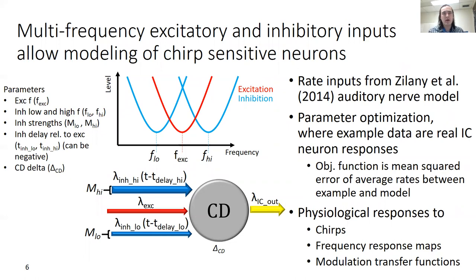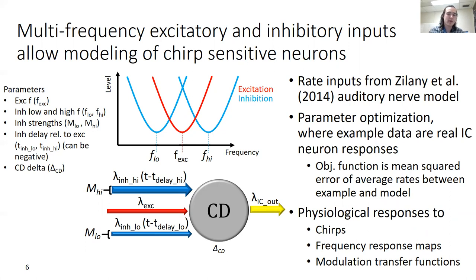Based on these proposed mechanisms, our model takes input from three frequencies: an excitatory center frequency and two flanking inhibitory frequencies. We utilize rate inputs from the Jelani et al. 2014 auditory nerve model. The IC stage has many adjustable parameters: the excitatory frequency, two inhibitory frequencies (one low and one high), strength constants for each inhibition, inhibitory delays relative to the excitation (which can be negative, meaning it arrives before the excitation), and a coincidence detection time window delta. We perform parameter optimization using real IC neuron recordings as example data, with the objective function being the mean squared error of average rate responses between example data and the model. This configuration allows us to fit parameters to many kinds of chirp sensitivity observed in physiology, while preserving known IC properties such as frequency response maps and AM tuning modulation transfer functions.